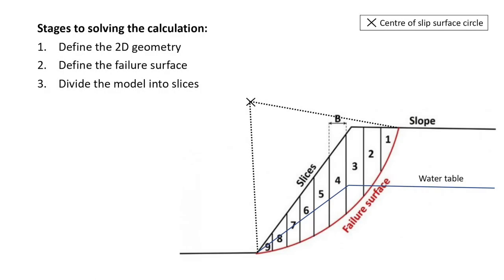Let's look at stages 1 to 3. After defining the 2D geometry and water table level, we assume a circular failure surface through the slope. For now we can define the center of this failure slope and radius at an arbitrary location. We then divide the slope within the bounds of the failure surface into a number of slices, the more the better.